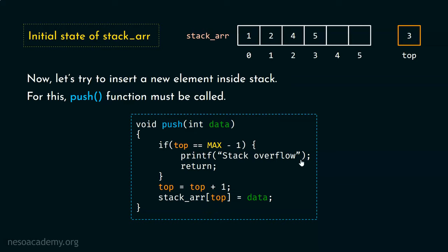Now we will increment the value of top by one, because top is not equal to max minus one. We first increment top by one. You already know what max is — I assume you have watched the previous lectures. So let's increment the top variable by one; it will become four. After this, we call stack ARR at top, and at that position we will store our data.